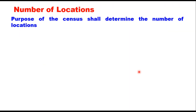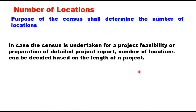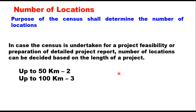The number of locations depends upon the purpose of the census. If the census is undertaken for project feasibility or preparation of a DPR, the number of locations can be decided based on the length of the project. IRC 9 suggests that for up to 50 km, there should be two locations for traffic census, and for a project length of 100 km, there can be three.